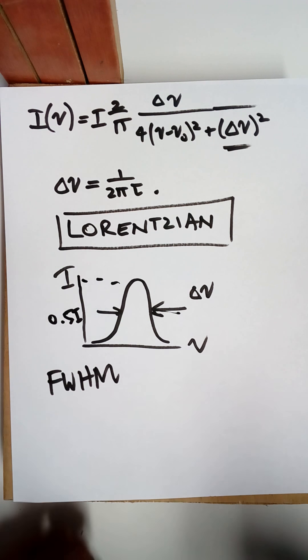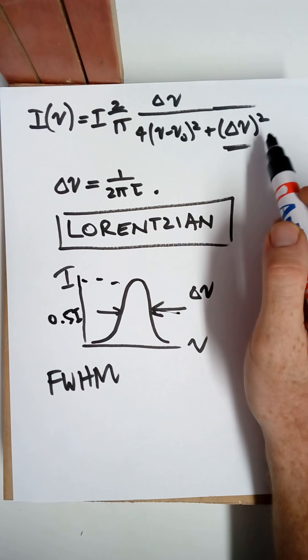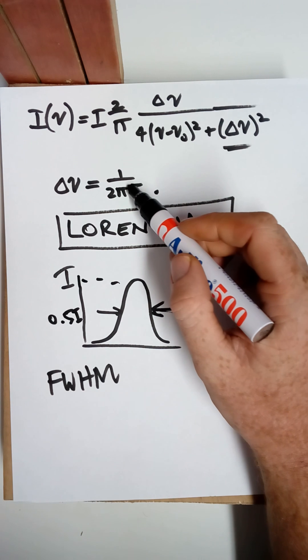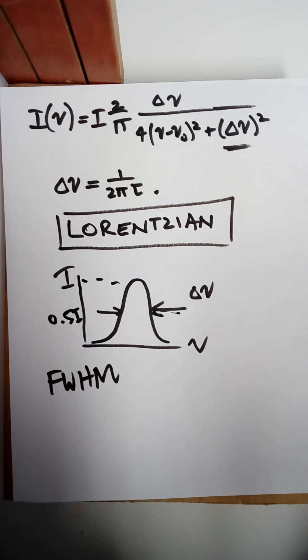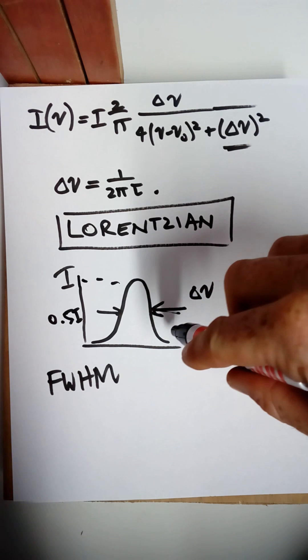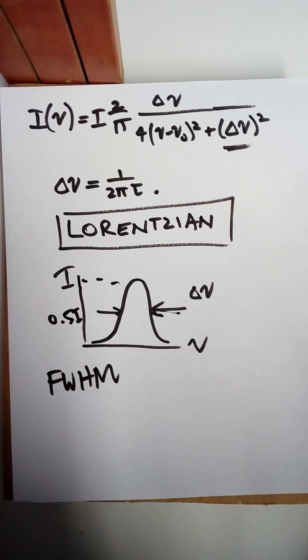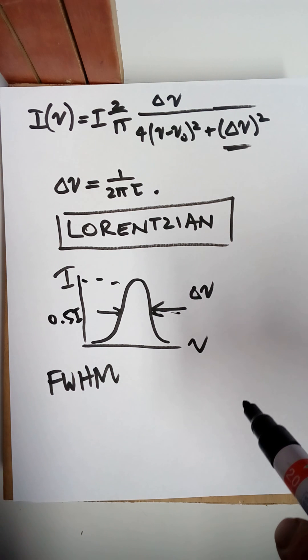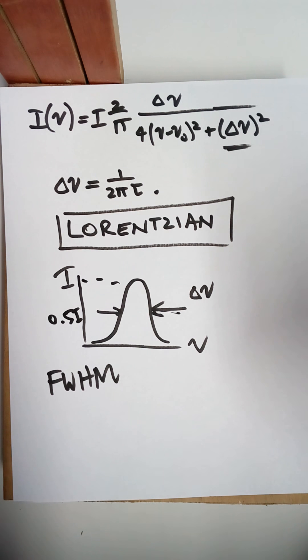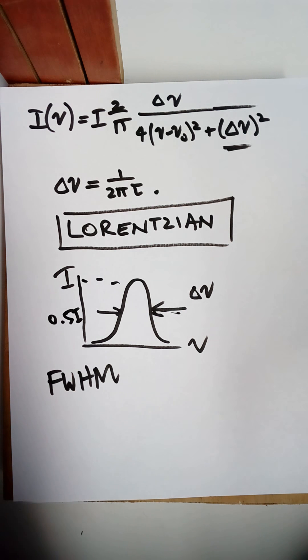So that comes to the end of this lecture. So we can see that this fundamental time constant for the spontaneous emission fundamentally determines the line width for lasers. But in reality, there's a lot of other mechanisms that broaden this line such as Doppler line broadening and other types that we're going to talk about in future lectures.